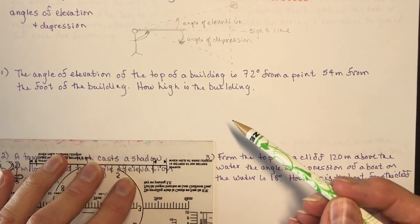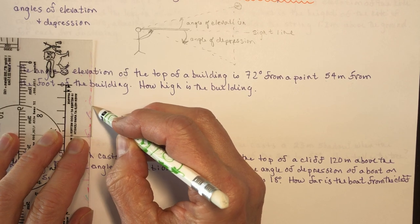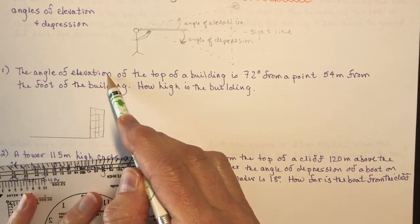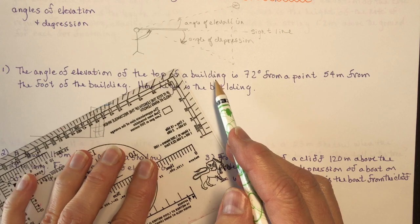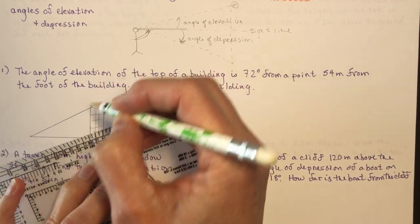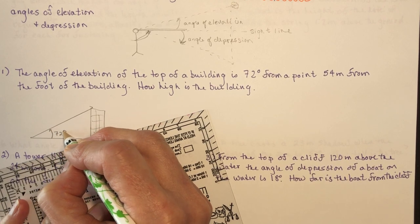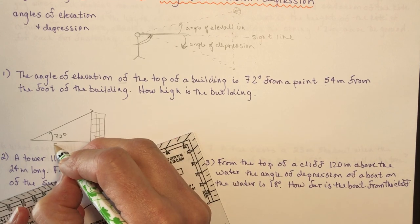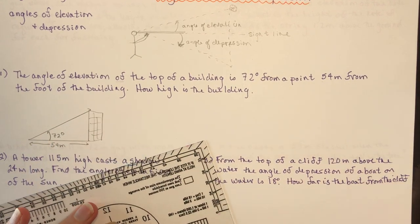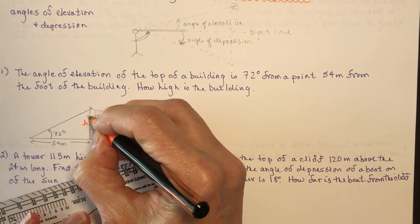The angle of elevation of the top of a building is 72 degrees from a point 54 meters from the foot of the building. How high is the building? Always draw yourself a diagram. We have the ground, we have a building. The angle of elevation is 72 degrees, and the distance from the point to the foot of the building is 54 meters. We want to find the height.